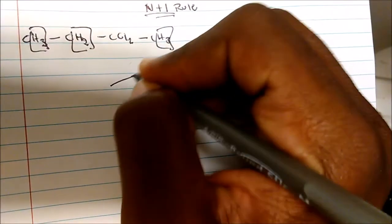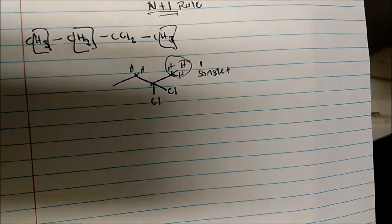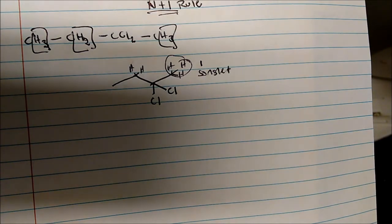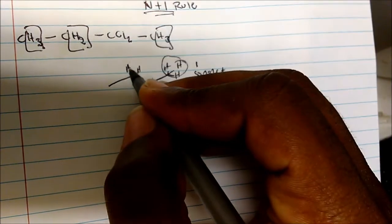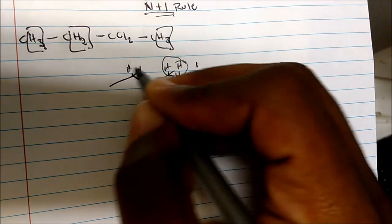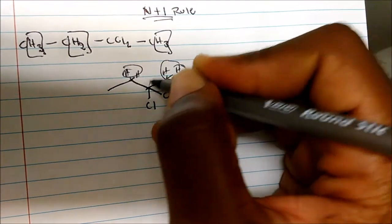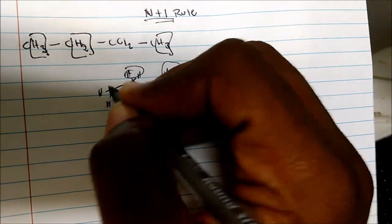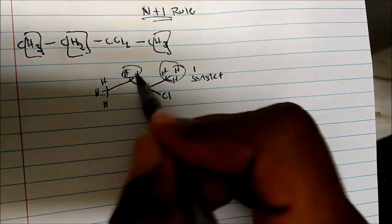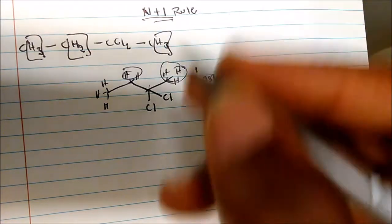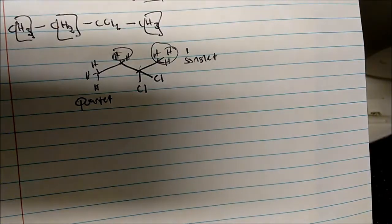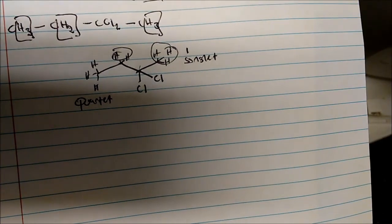Here we have these two protons, and even though the integration is two, we will only see one signal for this carbon. For these two protons, we look at the neighboring hydrogens. We have none on one side, but we have three hydrogens on the other side neighboring this CH2. So the N+1 rule says we have three hydrogens, and three plus one is four. Therefore on the NMR spectrum I should see a quartet splitting pattern.